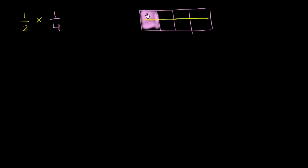Divide it into two equal sections and then take one of them. So the pink area is 1 half, and the whole pink area is 1 fourth. Now we're going to take half of it — that's this yellow square right over here.